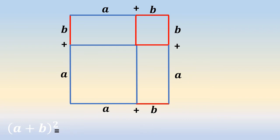Thus, we get two squares. The blue one is a square and the red one is b square. You should be able to see two rectangles, one on the top and one on the bottom right, and both have the length a and the breadth b.